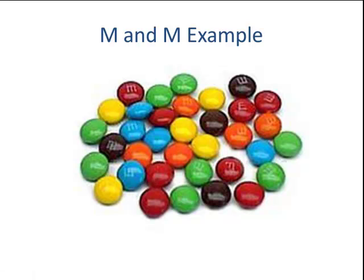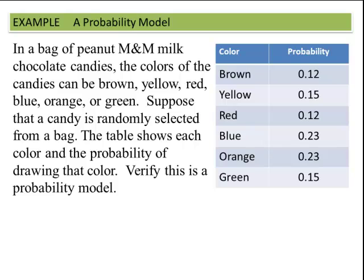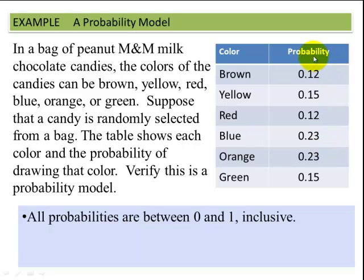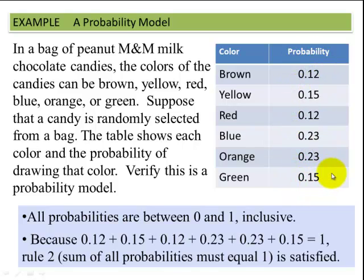Let's look at an M&M example. In a bag of peanut M&M milk chocolate candies, the colors of the candies are brown, yellow, red, blue, orange, or green. Suppose that a candy is randomly selected from my bag. The table shows each color and the probability of drawing that color. Verify that this is a probability model. So our first step: we have to make sure each of these probabilities for each of these outcomes is between zero and one, and they are. And then we need to see if the sum of all these outcomes equals one, and they do. So if you take 0.12 plus 0.15 plus 0.12 plus 0.23 plus 0.23 plus 0.15, it will equal one. So this is a probability model.